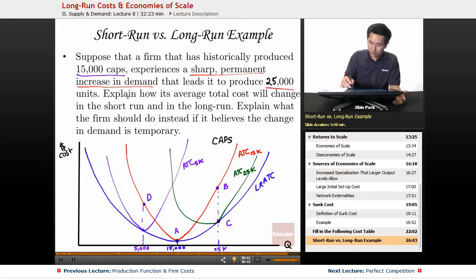So that answer is basically what would happen if it produced 25,000 units. And I just added, what would happen if they only produced 5,000 rather than 25,000? So explain how average total cost will change in the short run and in the long run.